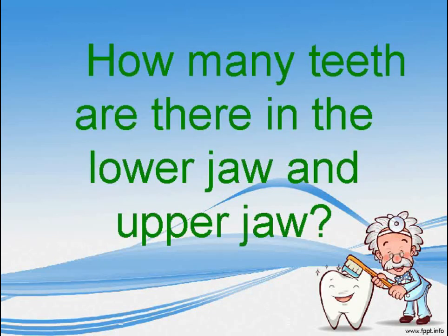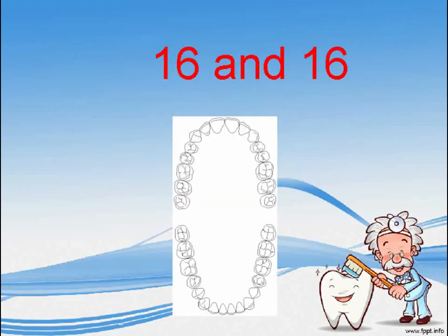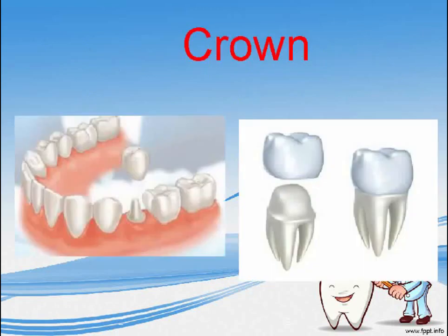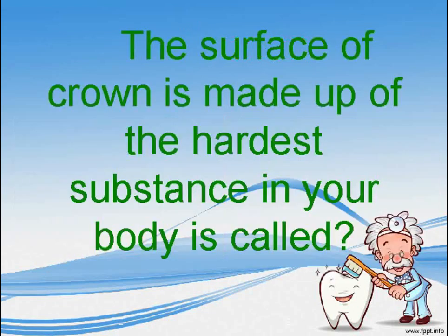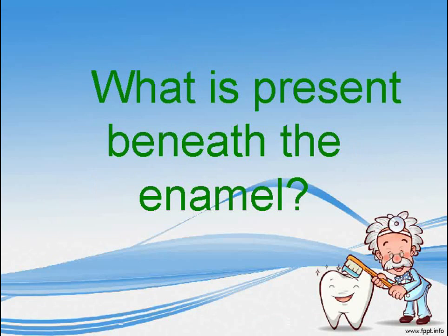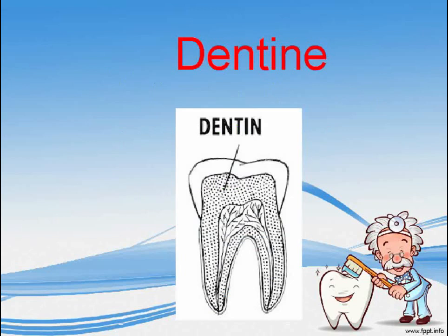How many teeth are there in the lower jaw and upper jaw? Sixteen and sixteen. What is the part of the tooth that is seen above the gum called? Crown. The surface of the crown is made up of the hardest substance in your body, which is called? Enamel. What is present beneath the enamel? Dentine.